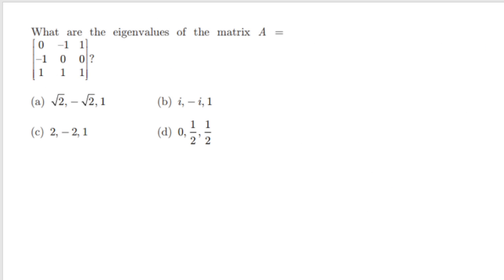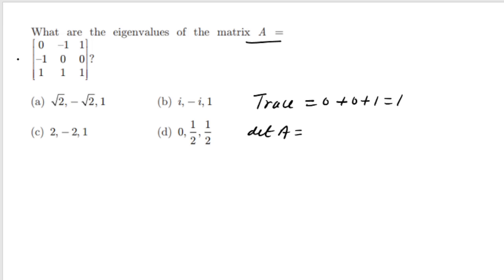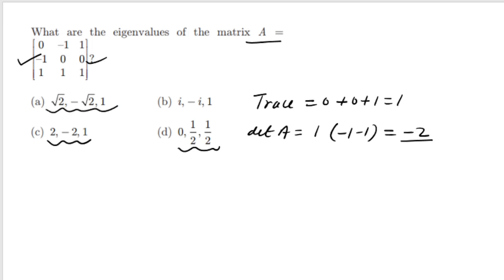What are the eigenvalues of this 3×3 matrix? Trace = 0+0+1 = 1, so sum of eigenvalues is 1 — all four options satisfy this, so we need the product. Expanding the determinant about the second row: the nonzero entry gives −1·(−1−1) = −1·(−2) = −2. So det(A) = −2 and product of eigenvalues = −2. Only option A gives product −2. The correct option is A.